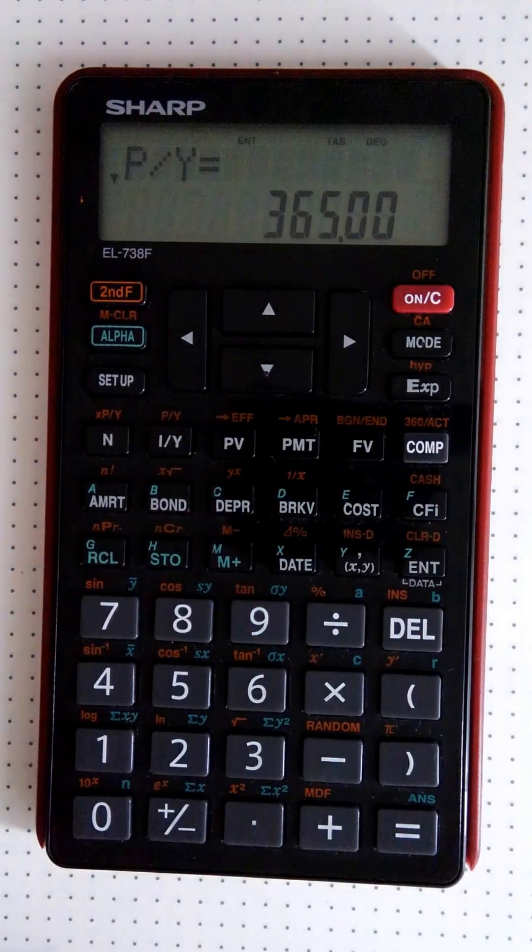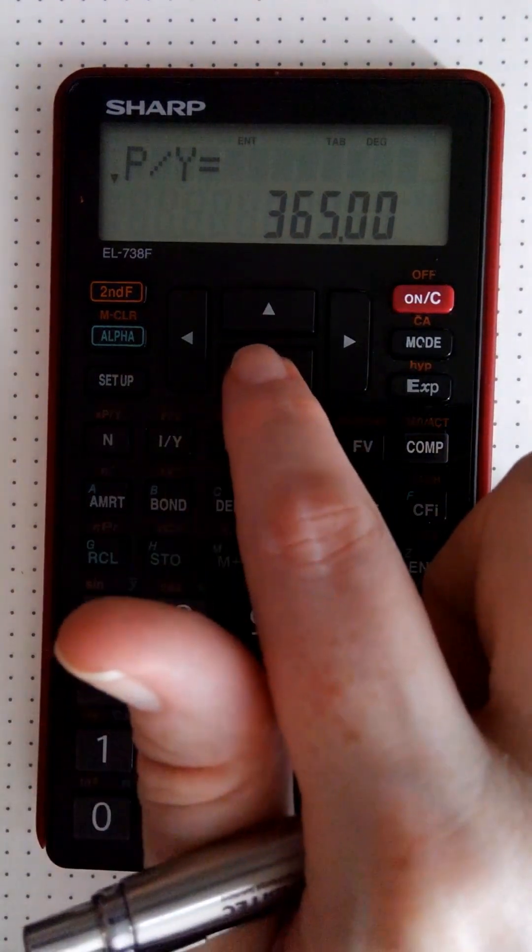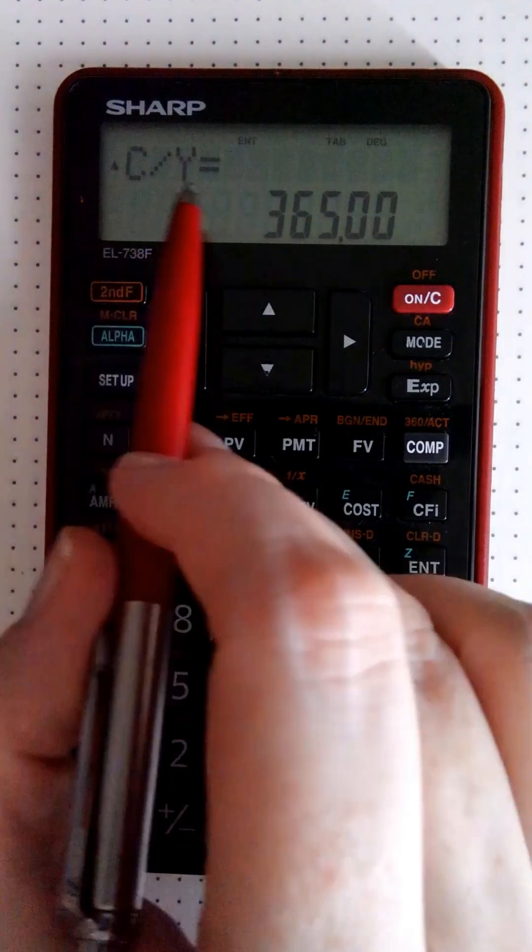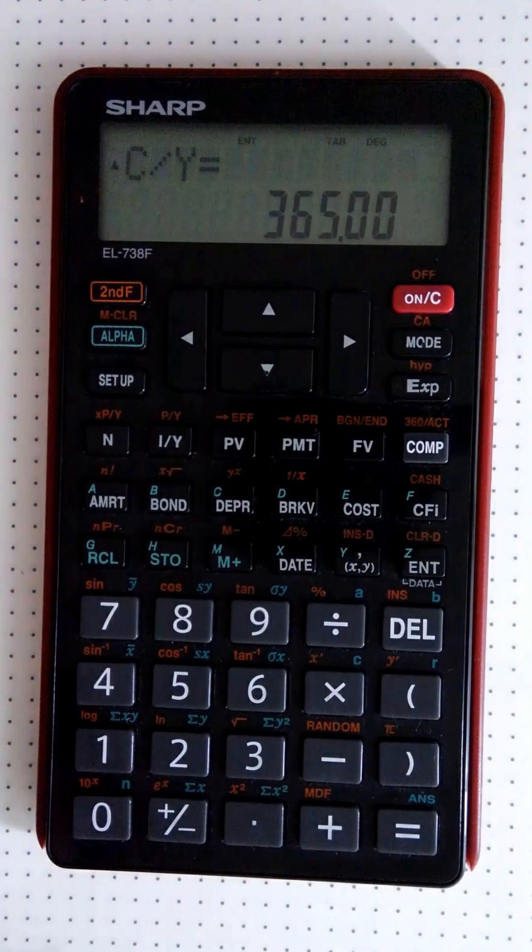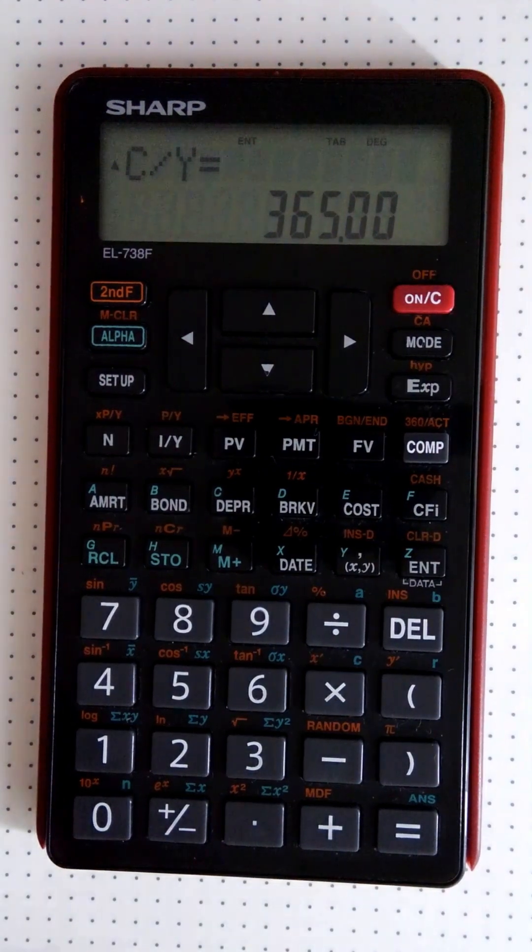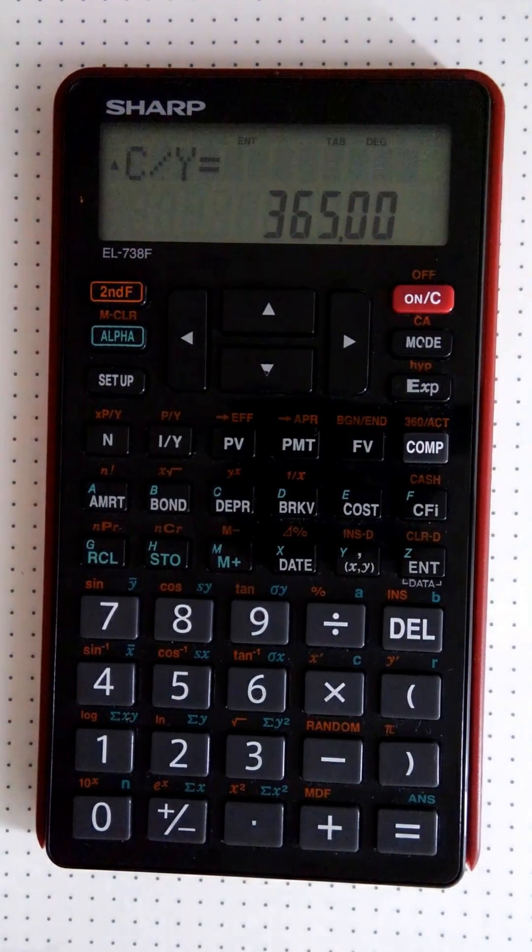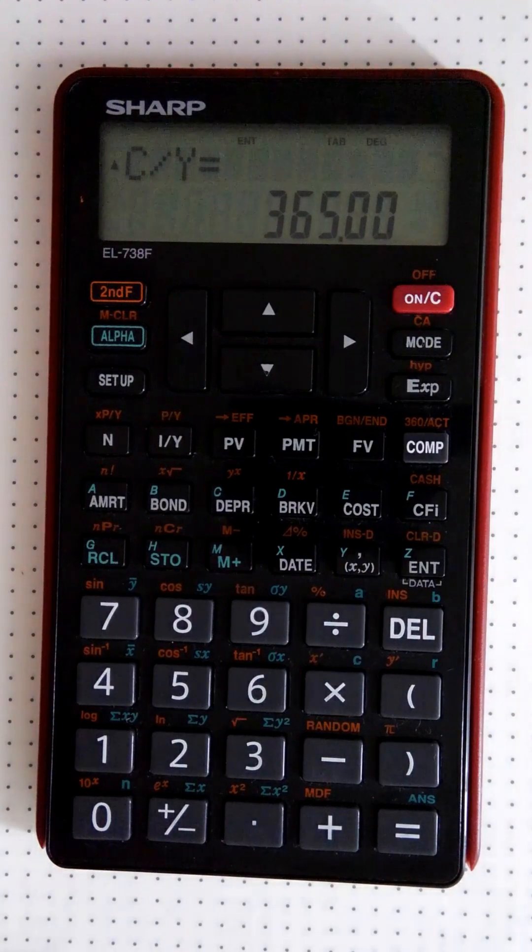Now to get to the compounding periods, we are just going to push down. And if you push down, we see compounding periods and it's set to 365. So the default is to have the payment periods and the compounding periods coinciding. So for us, for our basic compound interest calculations, this is how you're going to have it set up.